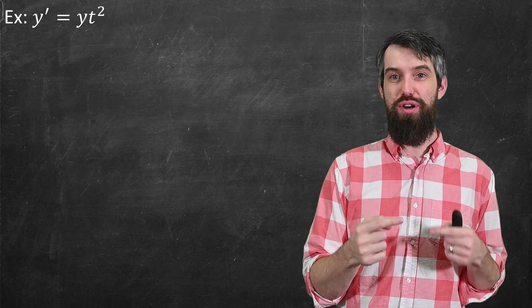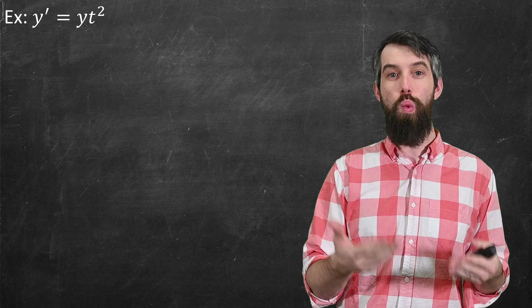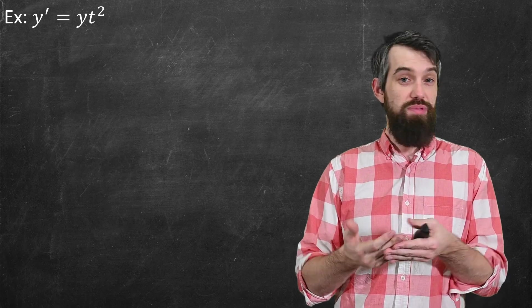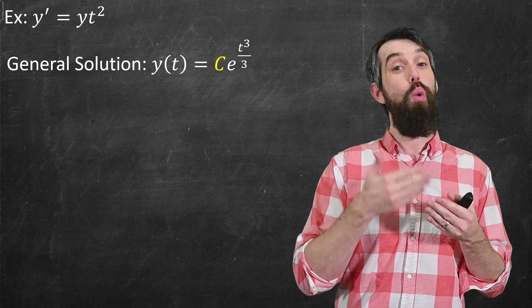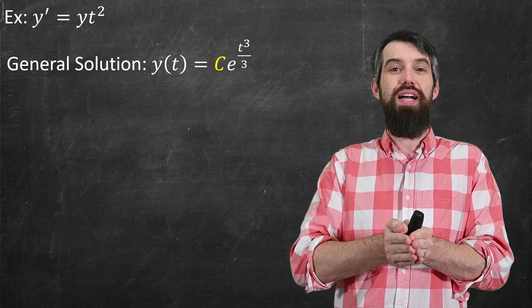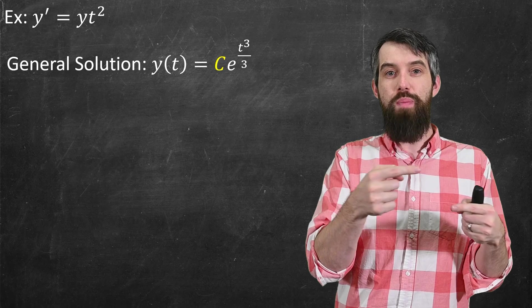I'm going to give a second example of a differential equation. Now y prime equals y times t squared. And this is just another differential equation, first order. And it has a general solution. y of t is a constant times e to the t cubed divided by 3.